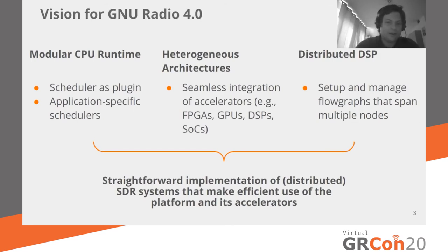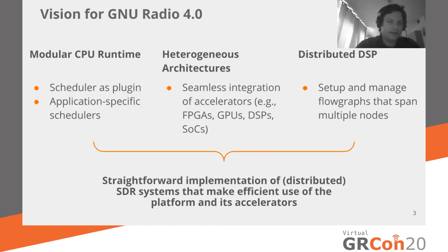The third area — which might not be what we immediately work on but that we keep in the back of our minds — is distributed signal processing: a GNU Radio flow graph running not only on one CPU but spanning different PCs connected somehow. If one gets overloaded, a block might be transitioned statefully to a different node and all data flows automatically rerouted. If we have these three improvements, it pays into what GNU Radio is already well known for — straightforward implementation of SDR systems — but maybe in the future these systems might be distributed and make more efficient use of accelerators.